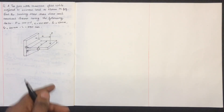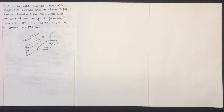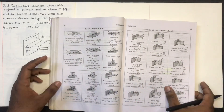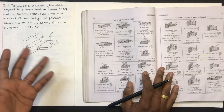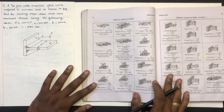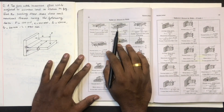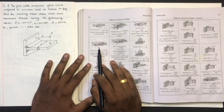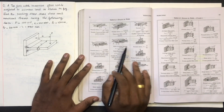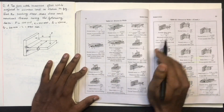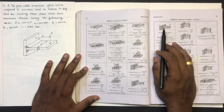We will show different types of weld joints. This is a butt weld. This is a transverse weld. This is a double transverse fillet. This is a T-joint panel with a vertical plate and horizontal plate. This is a T-joint transverse fillet.